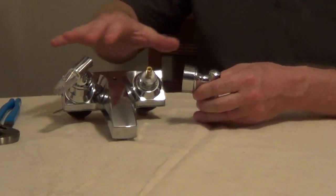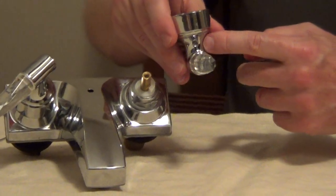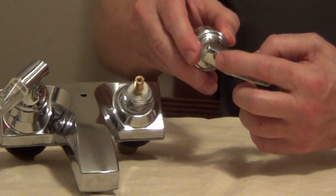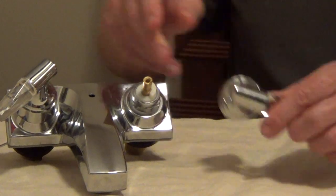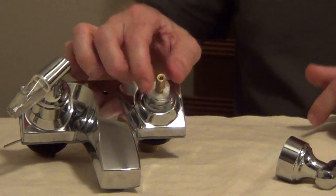And depending on which style you have, like this one has a little set screw off to the side. Others you would remove a little cap on the top and then remove a screw. And that allows you to pull off the handle.